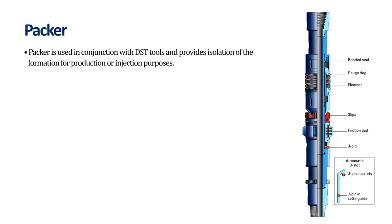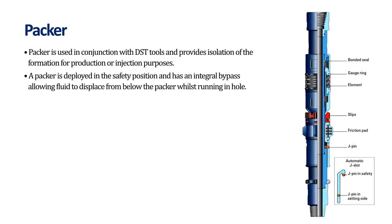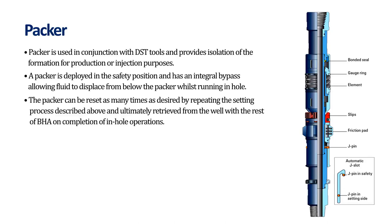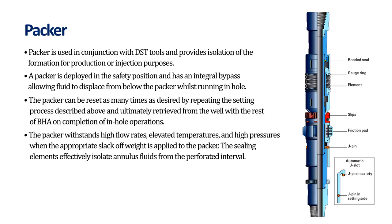Packer: used in conjunction with DST tools, it provides isolation of the formation for production or injection purposes. A packer is deployed in the safety position and has an integral bypass allowing fluid to displace from below the packer whilst running in-hole. The packer can be reset as many times as desired and ultimately retrieved from the well with the rest of the BHA on completion of in-hole operations. It withstands high flow rates, elevated temperatures, and high pressures when the appropriate slack-off weight is applied. The sealing elements effectively isolate annulus fluids from the perforated interval.